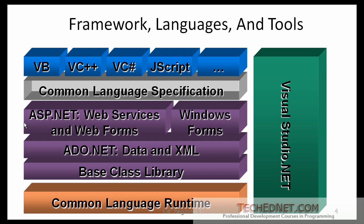The .NET framework exposes numerous classes to the developer. These classes allow the development of rich client applications and web-based applications alike. In this slide, these classes have been divided into four areas. ASP.NET provides the core web infrastructure such as web forms for user interface-based development and web services for programmatic interface development. User interface development on the Windows platform can be done using Windows Forms. ADO.NET and XML provide the functionality for data access.